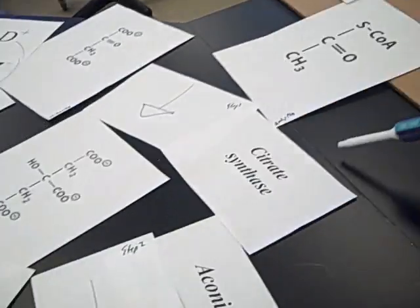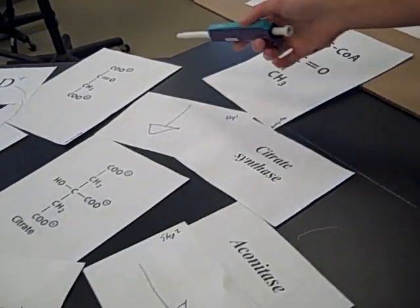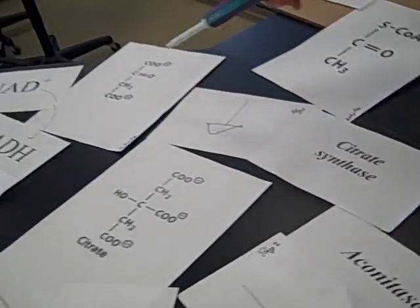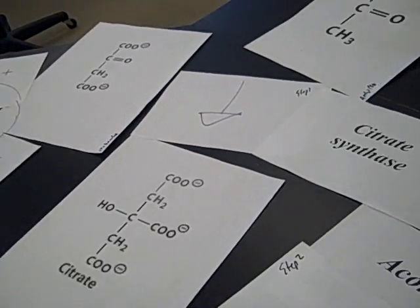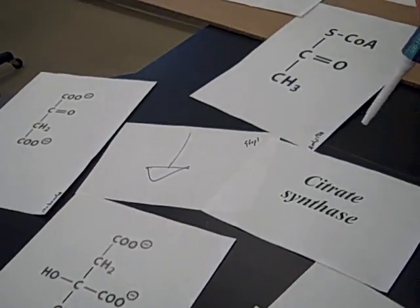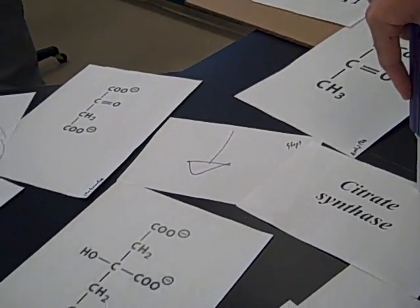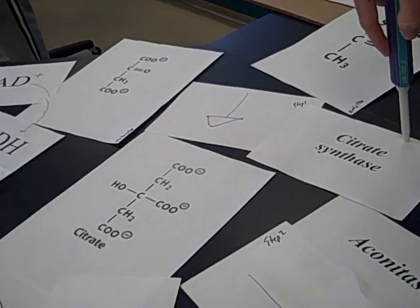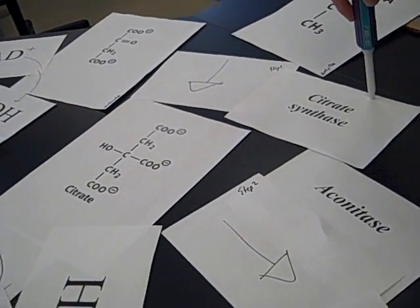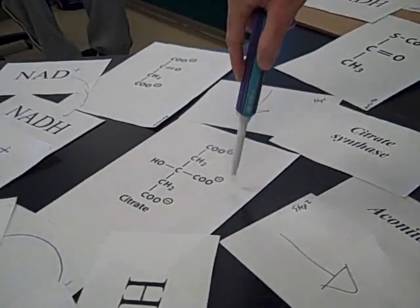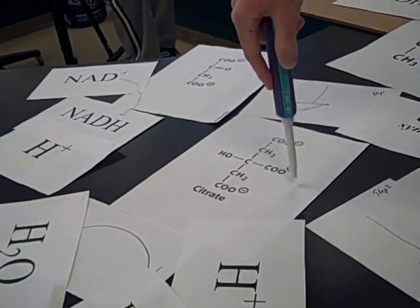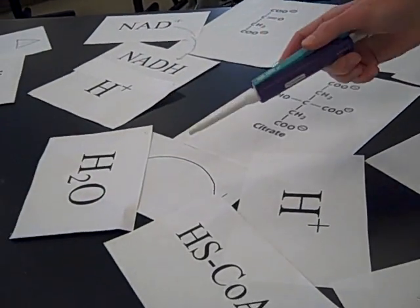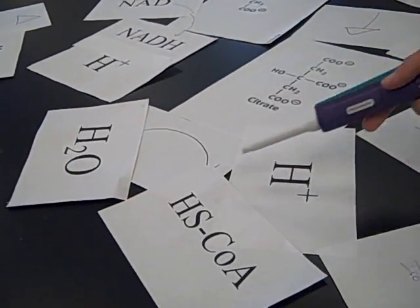Let's move on to step one. So you've got your acetyl-CoA enzymatic reactivity through citrate synthase to produce our beloved citrate, which water comes in and kicks off NADH.